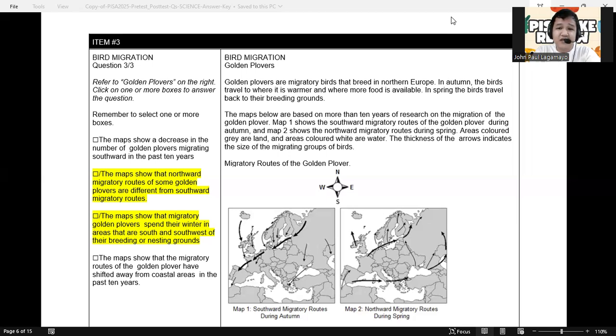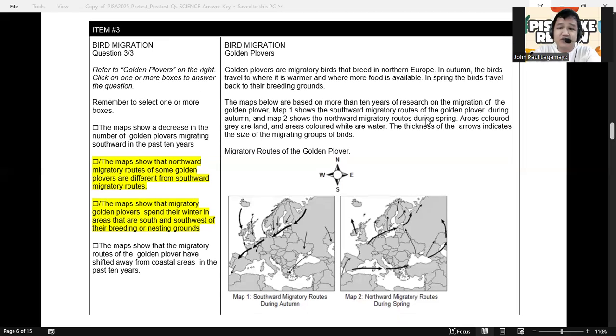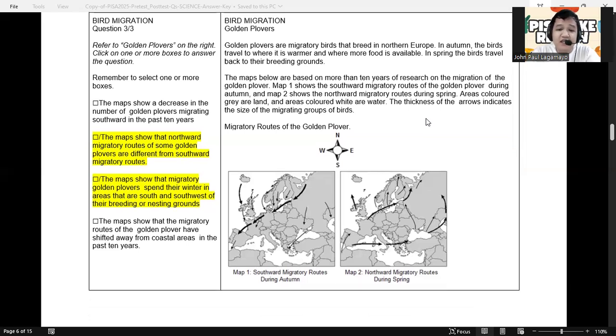The maps below are based on more than 10 years of research on the migration of the golden plover. Map 1 shows the southward migratory routes of the golden plover during autumn, and map 2 shows the northward migratory routes during spring. Areas colored gray are land and areas colored white are water. The thickness of the arrows indicate the size of the migrating groups of birds. So let's try to take a look at map 1 and then map 2. We have to analyze both of the maps in order for us to answer the question.